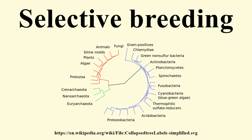Charles Darwin coined the term selective breeding. He was interested in the process as an illustration of his proposed wider process of natural selection. Darwin noted that many domesticated animals and plants had special properties that were developed by intentional animal and plant breeding from individuals that showed desirable characteristics, and discouraging the breeding of individuals with less desirable characteristics.